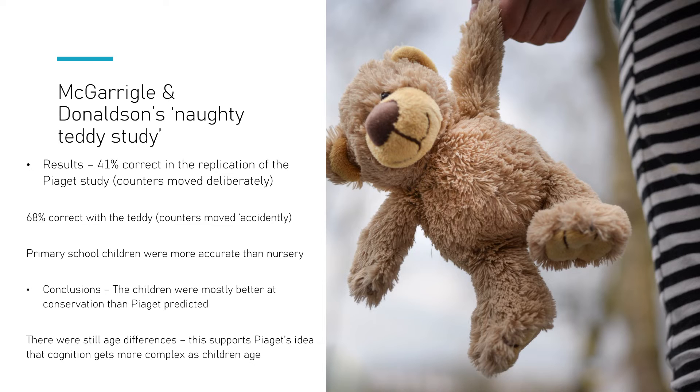So the children were better at conservation than Piaget suggested. It may have been because an adult was manipulating the counters, an adult was purposely changing, maybe they thought they had to answer in a particular way, whereas when it was with the teddy they were better, they could actually count, they could conserve. So part of McGarrigle and Donaldson's study goes against Piaget's theory - children are actually better at conservation than Piaget thought they were. However, the other side where Piaget said children get better as they age, that was actually supported by this study because the primary school children were better than the nursery school children.